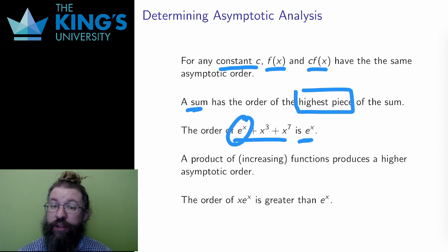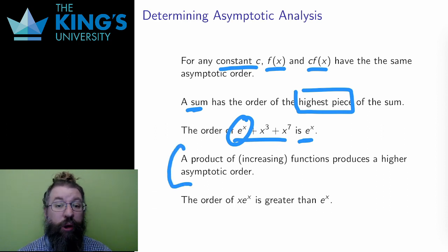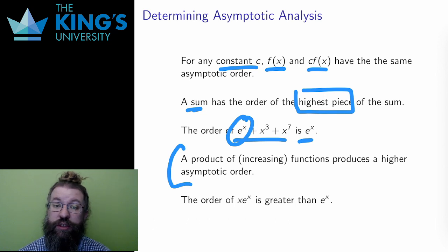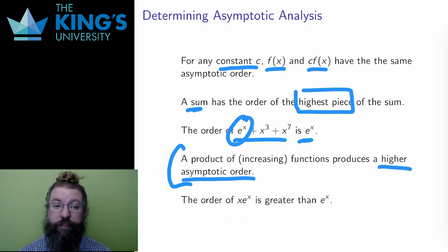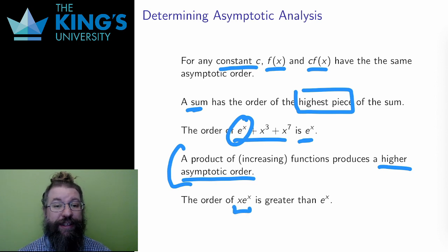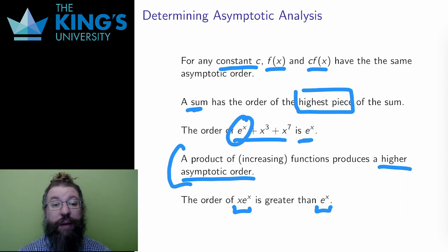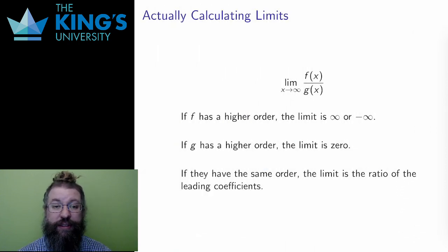That's dealing with addition. Products are a bit different. If I multiply two functions that are both growing — both with asymptotic order greater than a constant — then the asymptotic order will increase. Therefore, the order of x times e to the x is greater than the order of e to the x alone, because I have multiplied by another growing function, in this case the linear function x.